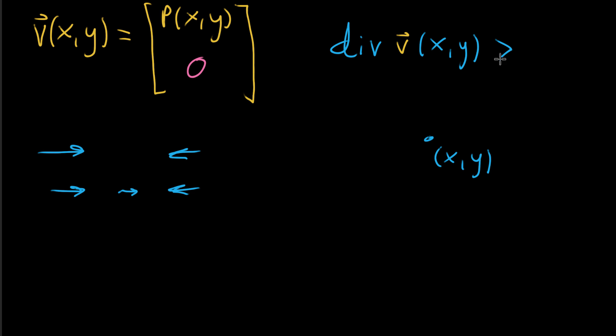Two cases where the divergence of this might look positive are one, where nothing happens at the point, right? So in this case, p would be equal to zero at our point. But then to the left of it, things are moving to the left, meaning p, the x component of our vector-valued function is negative.